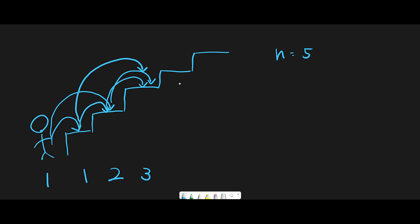We do the same thing. Let's think about the fourth stair — we don't draw arrows, we just calculate. One step back should be three ways, and two steps back should be two ways. So two plus three gives us five ways to reach the fourth stair. And for the fifth stair, one step back should be five ways, and two steps back should be three. So three plus five equals eight. That is the basic idea, and to keep these numbers, we will use an array. In other words, this is a dynamic programming problem.